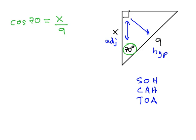Our calculator, or our trig table, can tell us what the cosine of 70 is. It's going to be 0.342 equaling x over 9.